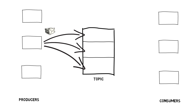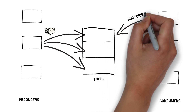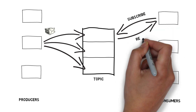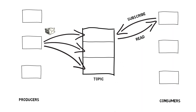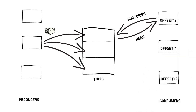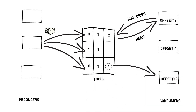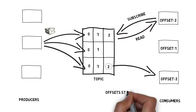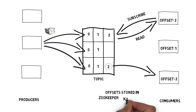Consumers read messages. They subscribe to one or multiple topics and read messages in the order they were produced. The consumer keeps track of its position in the stream of data by remembering what offset was already consumed. Offsets are created at the time a message is written to Kafka and they correspond to a specific message in a specific partition. Within the same topic, multiple partitions can have different offsets, and it's up to the consumer to remember what offset each partition is at. By storing offsets in Zookeeper or Kafka itself, a consumer can stop and restart without losing its position.